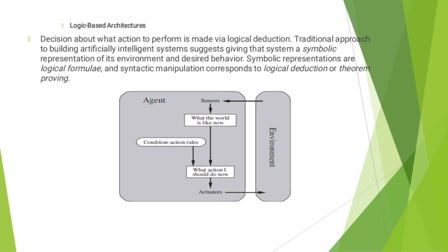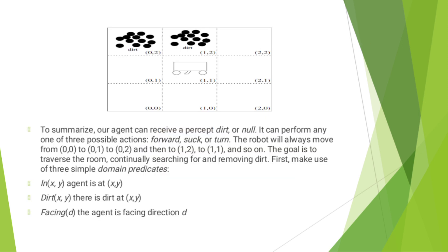The first one is Logic-based Architecture. Decisions about what action to perform are made via logical deduction. Here, a diagram is given. The traditional approach to building artificially intelligent agents involves giving that system a symbolic representation of its environment and desired behavior. The symbolic representations are in logical form, where manipulation corresponds to logical deduction or theorem proving.